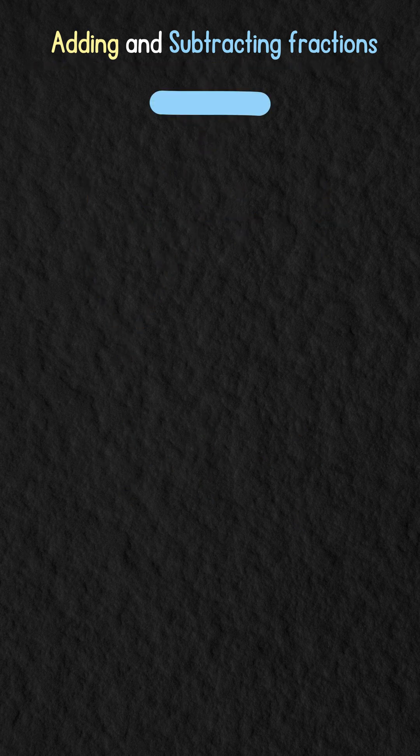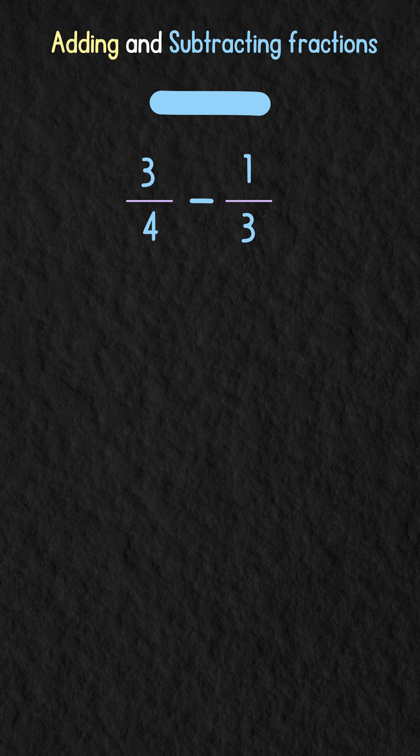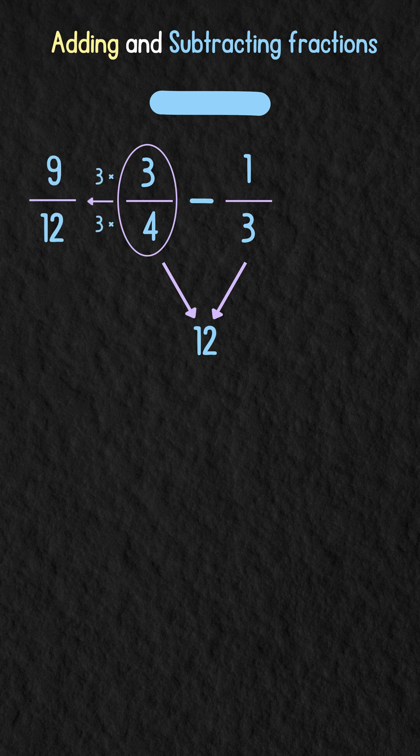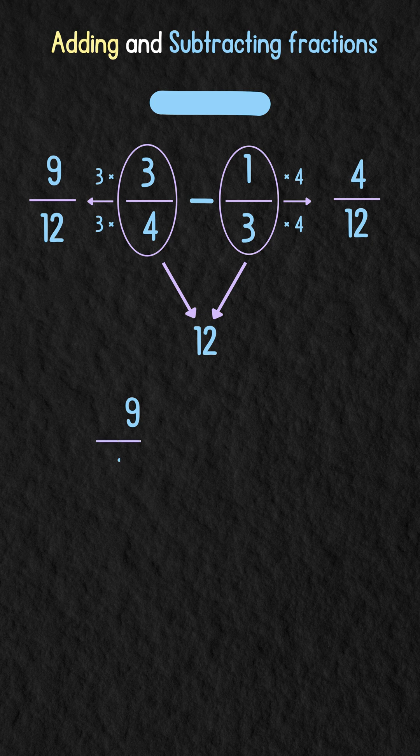Now for subtraction, say we want to subtract 1 over 3 from 3 over 4. First, we find a least common denominator, in this case 12. We can rewrite 3 over 4 as 9 over 12, and 1 over 3 as 4 over 12. Now we can subtract 9 over 12 minus 4 over 12, which equals 5 over 12.